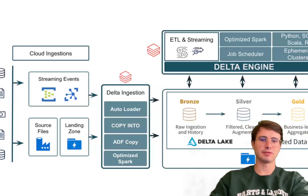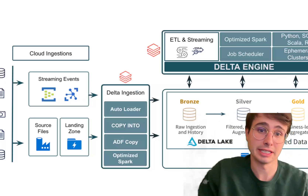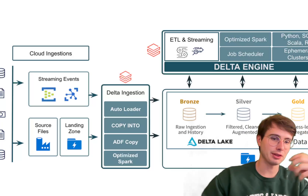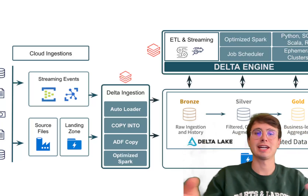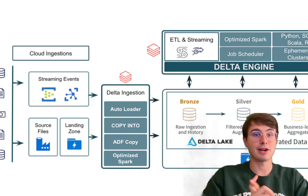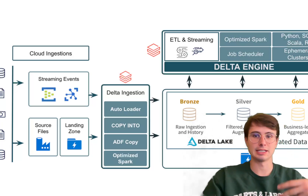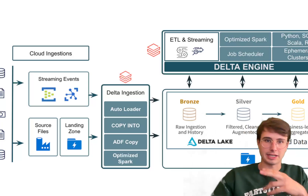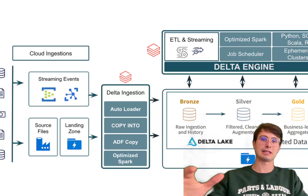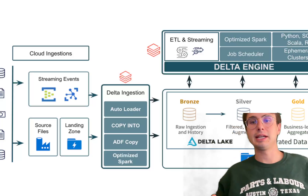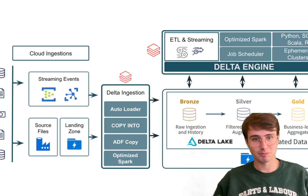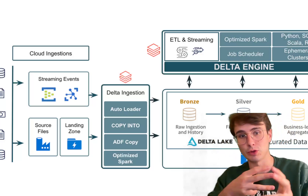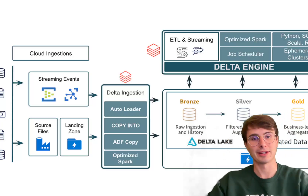Now let's wrap up with the pros and cons of Delta Lake to help you understand if it's a good solution for you. On the pros side: number one, data reliability — its support for ACID transactions ensures data is reliable and consistent even in complex, large-scale processing scenarios. Two, scalability — it's designed to handle large-scale data processing and allows you to horizontally scale, suitable for organizations with really big data needs. Three, schema enforcement — by enforcing schemas, Delta Lake helps maintain data quality and consistency over time, keeping your data clean for downstream activities.